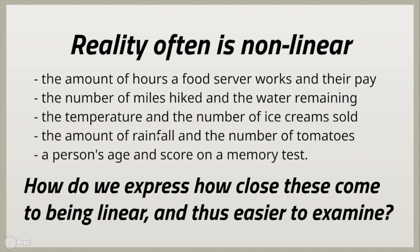If there was no rainfall or very little, the crop will be pretty small. If the rainfall is just right, the number of tomatoes in the harvest will probably be very good. But if there's too much rainfall, monsoon after monsoon, you'll get a very small crop too. So in a situation like that, the data is probably curved. The last example is the age of a person and their score on a memory test. Looking at adults from age 20 to 100, the older the person gets, the score on a memory test will generally go down, but there's no hard and fast rule about how much it goes down per year. All of these are situations that are nonlinear.